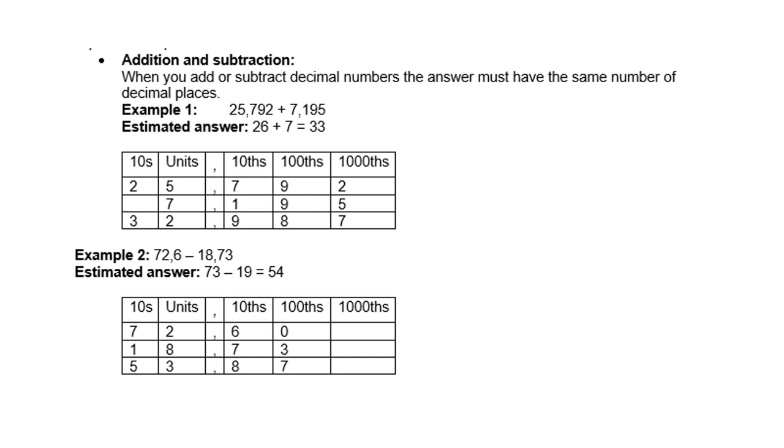For example, 25,792 plus 7,195. The estimated answer is, you round 25,7 up to 26, and you round 7,19 down to 7. So 26 plus 7 is 33, so that is the estimated answer.